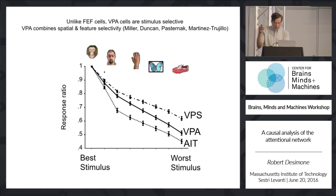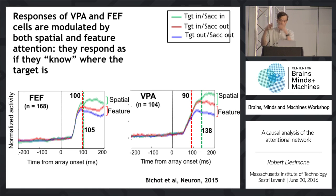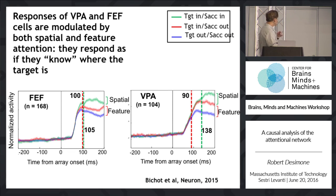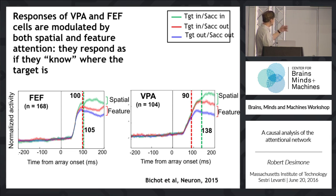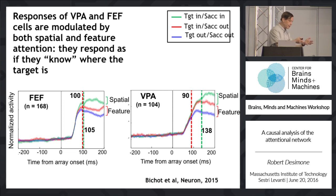In the visual search task, we separate responses according to whether they are modulated by the spatial direction of the animal's attention versus feature attention. Both the frontal eye fields and VPA show a nice spatial signal. Looking at the timing of these signals, the latency of the spatial signal is earlier in the frontal eye fields than in VPA — about 100 milliseconds versus 138 milliseconds — so the frontal eye fields have temporal precedence for spatial processing.